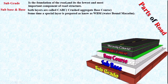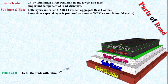In the case of base course, it consists of different types of crushed aggregate which have different types of voids on the surface. So we provide a prime coat at the top surface of the base course to fill these voids with bituminous material. As you can see from the picture, the green color shows the prime coat, which is provided to fill the voids on the top surface of the base course.